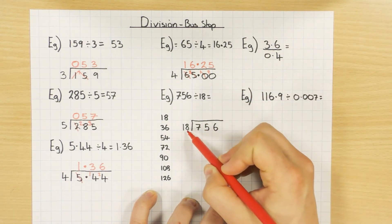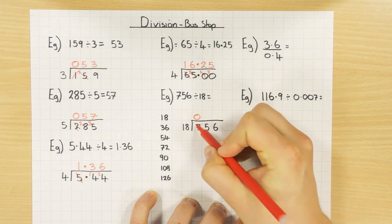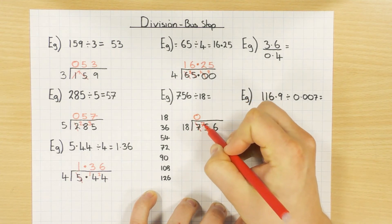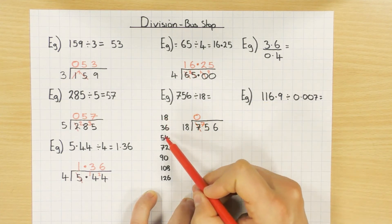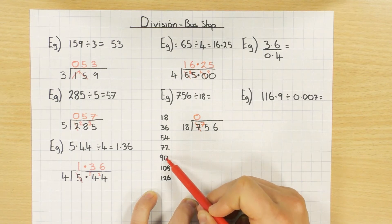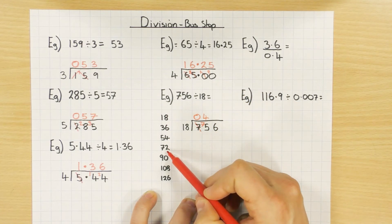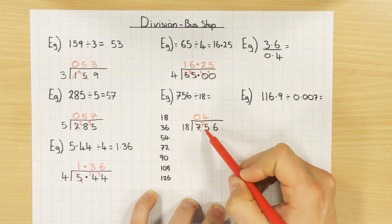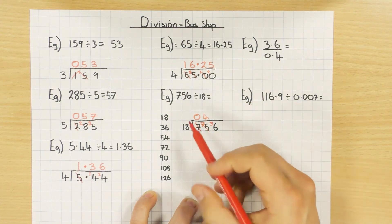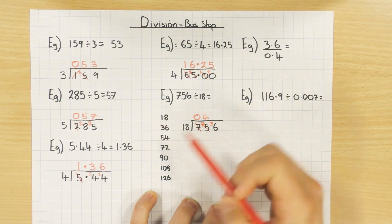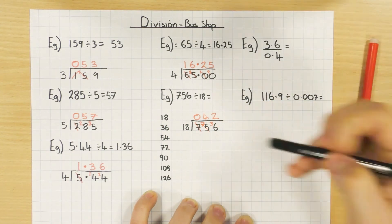How many 18s go into 7? None — so carry the 7. How many 18s go into 75? Looking at the times table: 4 × 18 = 72, so it goes in 4 times with 3 left over. How many 18s go into 36? It goes in twice with no remainder. So the answer is 42.